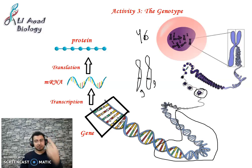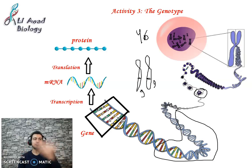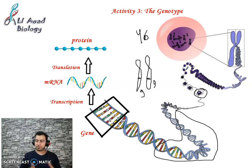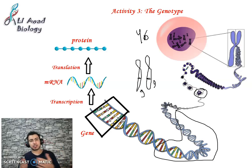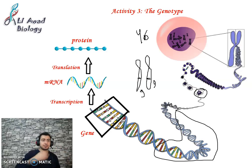Each gene codes for one trait, one characteristic. Each gene gives one and only one type of protein. The gene of insulin gives the protein insulin. The gene of hemoglobin gives the protein hemoglobin. The gene of the blood group gives the protein that determines the blood group.